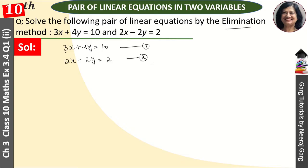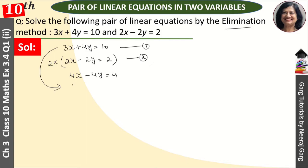Multiplying the second equation by 2 gives us 4x minus 4y is equal to 4. We keep the first equation as it is: 3x plus 4y is equal to 10. Now the coefficients of y are equal and opposite, so we can add the two equations.